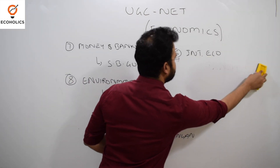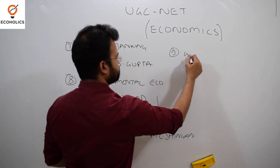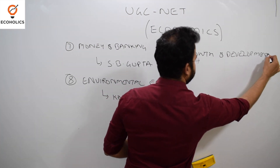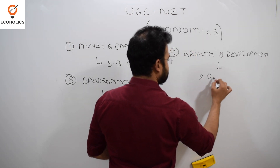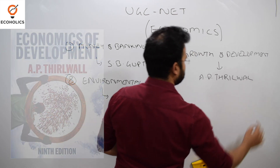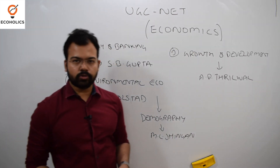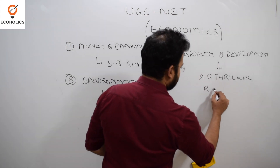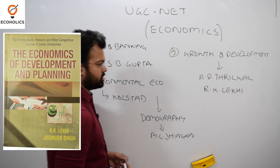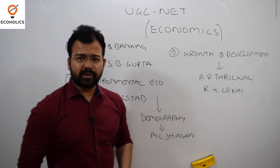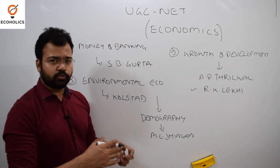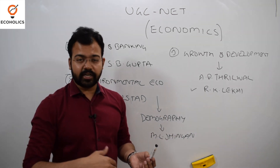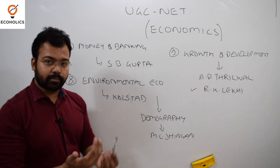The ninth part is Growth and Development. For this, there is one book known as A.P. Thirlwall, which is the best book and contains a lot of concepts and theories. If you are not able to buy it, R.K. Lekhi will give you better coverage. For UGC Net especially, Lekhi is a good book because it gives vast coverage of all theories. In UGC Net they ask about horizontal knowledge, not vertical — meaning they ask about coverage rather than depth.